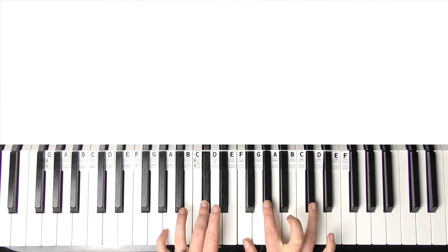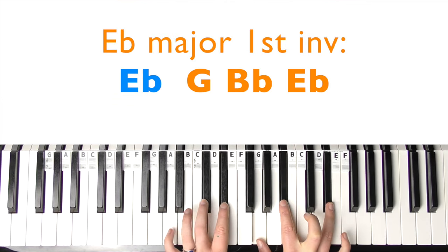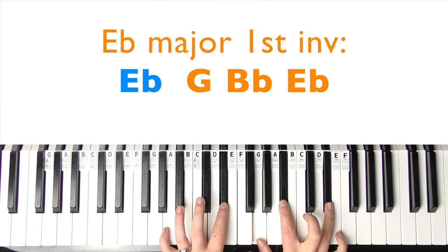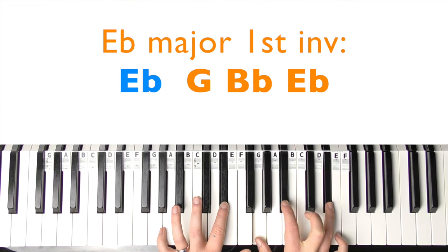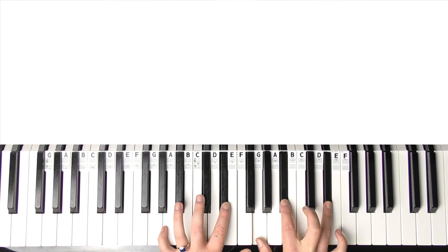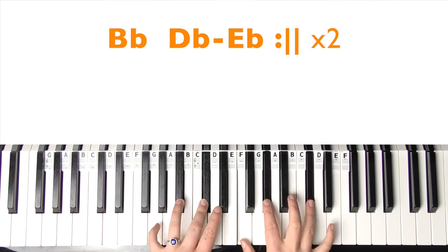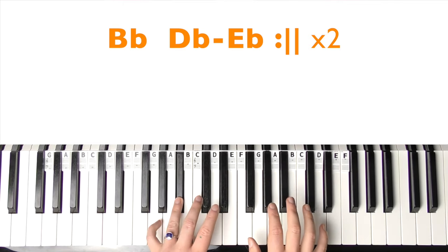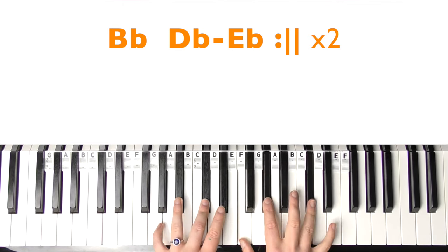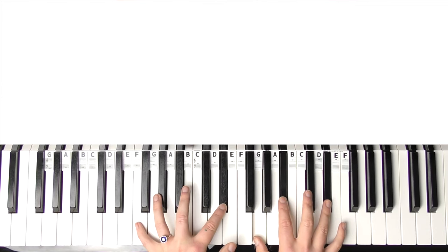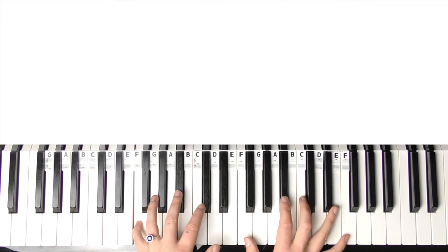And then you're going to move that shape up one to E-flat major first inversion. So that's E-flat, G, B-flat, E-flat. So there we have... do that again. Then it goes back into F minor.